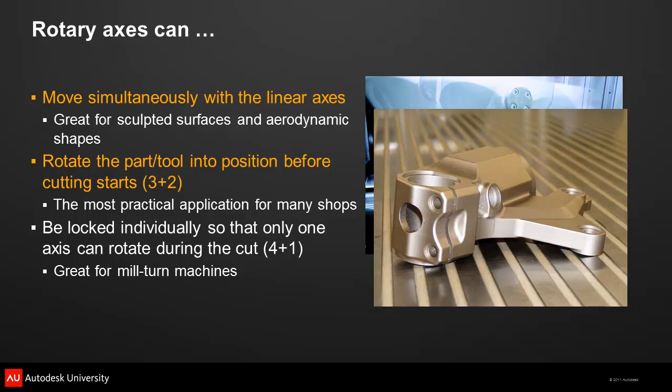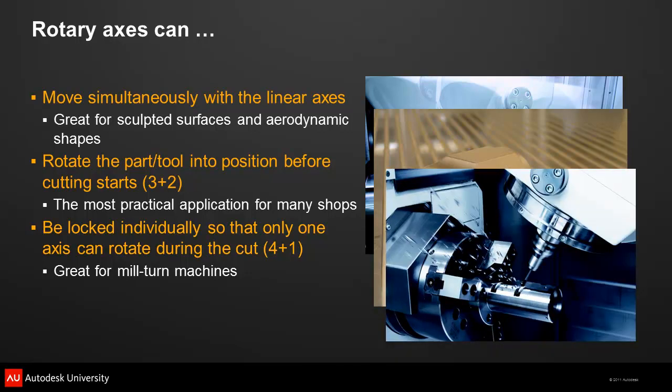3 plus 2 machining also allows you to rotate the part into a position that lets you reach deep areas with shorter tools — that way you don't have to deal with the problem of tool deflection. Another practical application is to lock only one of the axes, which is called 4 plus 1 machining.